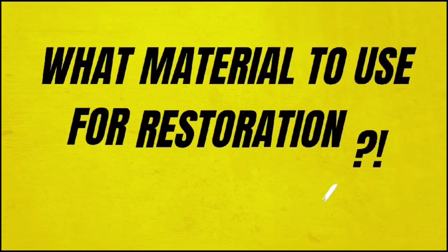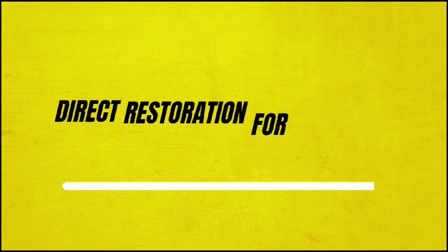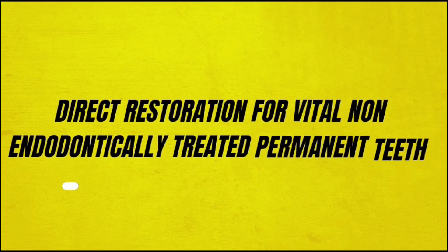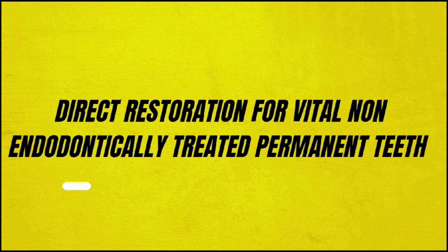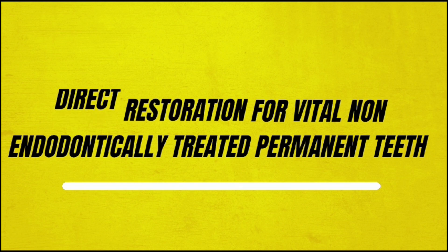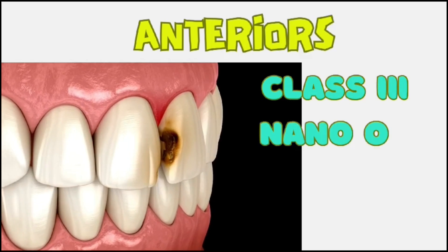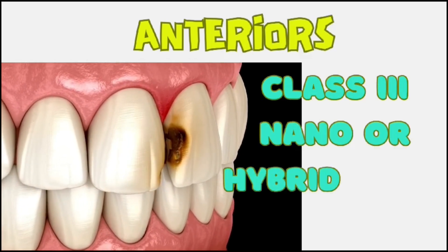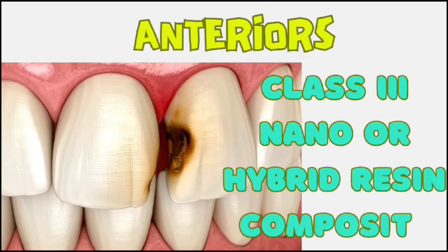This is Part 2 of what material to use for restoration. We are going to discuss direct restoration for vital, non-endodontically treated permanent teeth. Starting off with anteriors: if there is a Class 3 cavity, preferably use nano or hybrid resin composite.